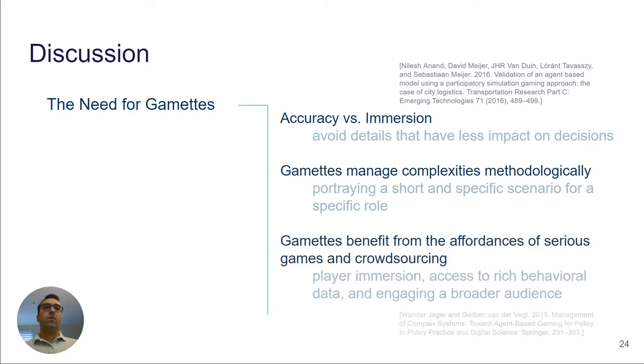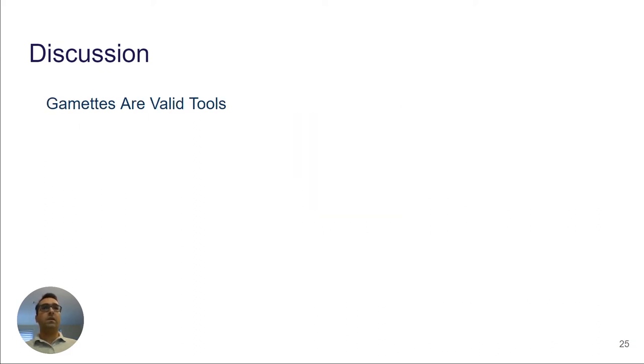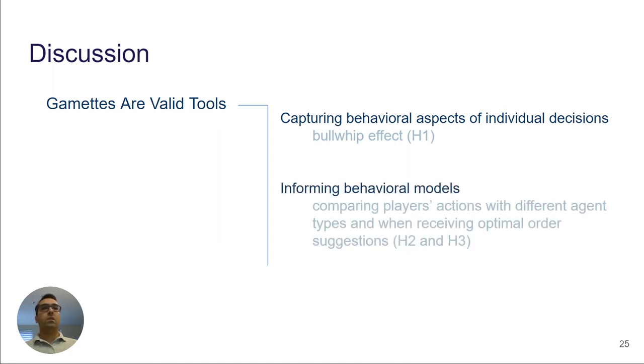Finally, we designed gamettes from the viewpoint of serious games and crowdsourcing in order to benefit from the affordances of player immersion, access to rich behavioral data, and engaging a broader audience. Previous studies also suggest that use of serious games in agent-based simulation helps in building more intuitive and interactive simulation environments. We validated the use of gamettes by showing the evidence of the bullwhip effect in our experiment. We also observed that participants amplify their orders even more than human-like agents in our simulation. This shows that gamettes have the capability to provide rich behavioral data to inform simulation agents.